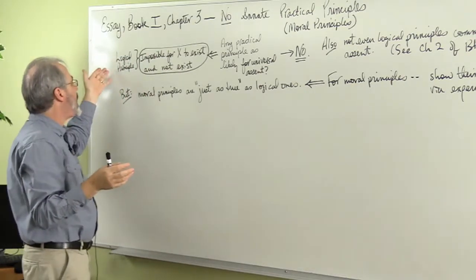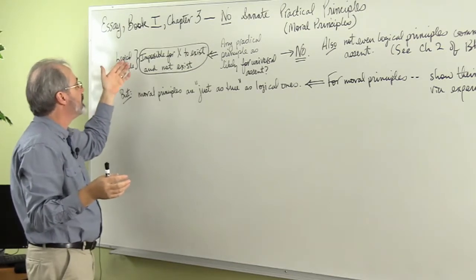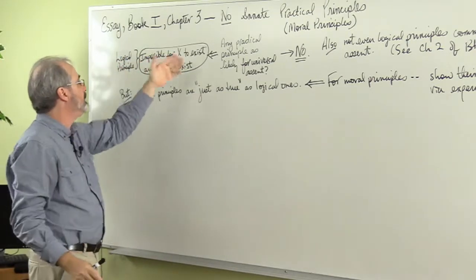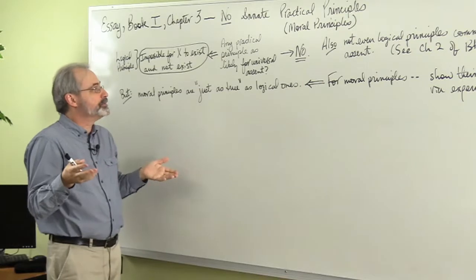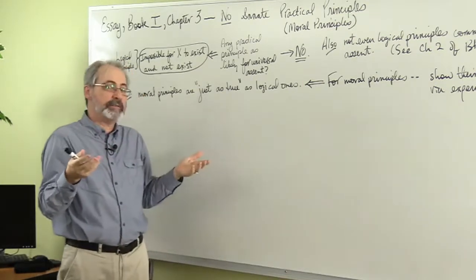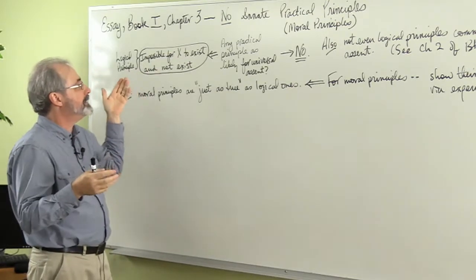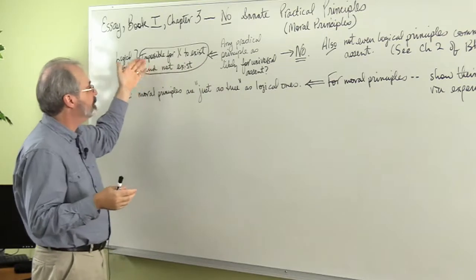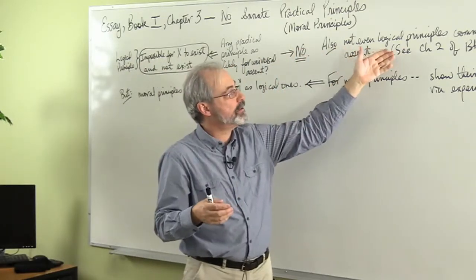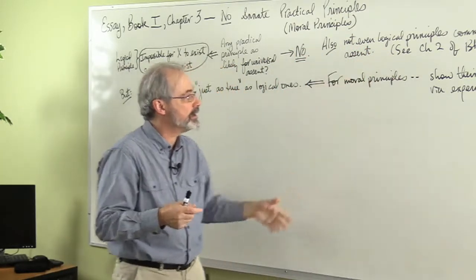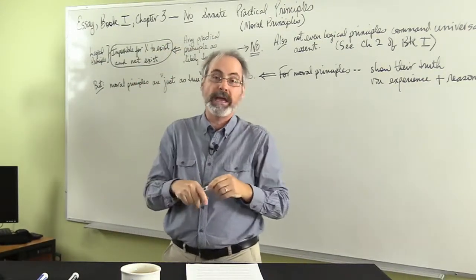Now, so a little recap from the, Locke picks up and he says, look, think about the logical principle that it's impossible for X, whatever X is, to exist and simultaneously not exist. That principle is, as we've seen, it doesn't have universal consent, because children wouldn't consent to it. They don't know about it. But is there any moral principle as likely for universal consent as this? And Locke says no. So not only is it the case that logical principles do not command universal ascent, moral principles are even further away from likely commanding universal ascent.